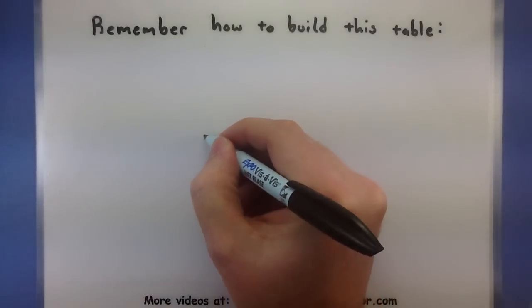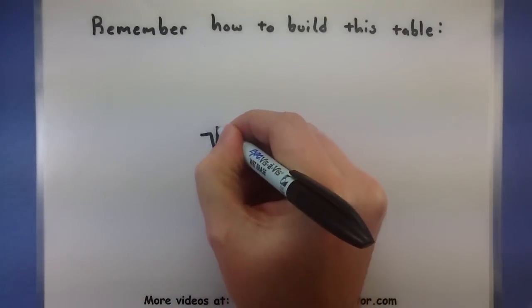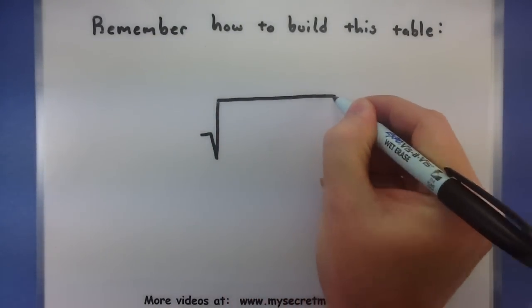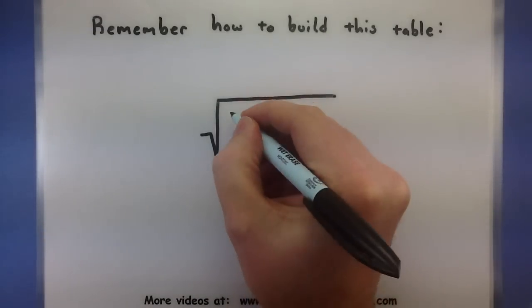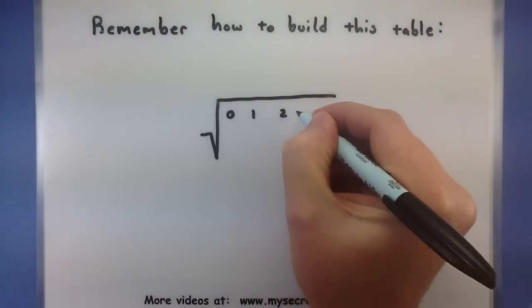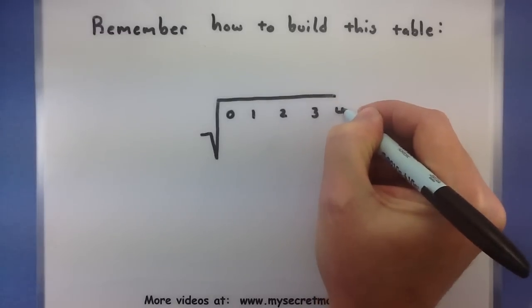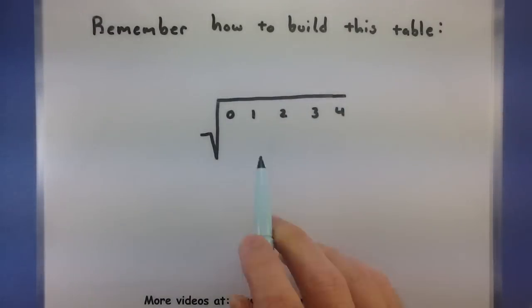When you first start building this table, build a giant square root. We're going to put a lot of stuff underneath it, so it needs to be pretty big. Then start off with the numbers 0, 1, 2, 3, and 4. So you can see you're just starting at 0, counting all the way up to 4.